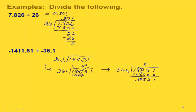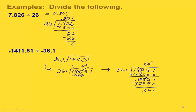Now we're thinking about how many times 361 goes into 3285 — let's guess nine times. Nine times six is fifty-four, carry the five, nine times three is twenty-seven plus five is thirty-two. Subtracting with borrowing: fifteen minus nine is six, seven minus four is three. Now 361 goes into 361 once with a remainder of zero. We put the decimal point in our quotient right above where the one was in our dividend. Since we already decided our quotient would be positive, we end up with positive thirty-nine and one tenth.